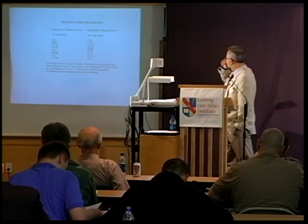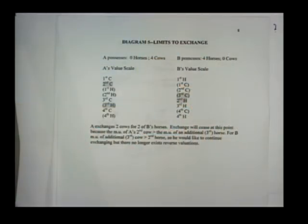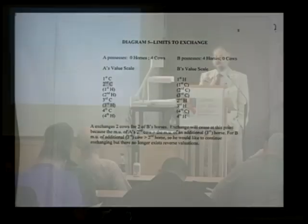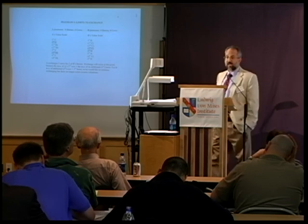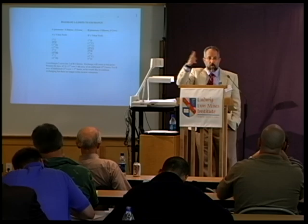B, on the other hand, would like the exchange to go further because B ranks the third cow above the horse he'd be receiving — notice he ranks the third cow above the third horse on his scale. But that exchange cannot take place without injuring A. Unless B put a gun to A's head and made it a coerced exchange, the exchange process stops. We say in economics that the mutual gains from exchange are exhausted at that point.